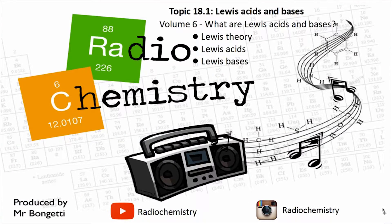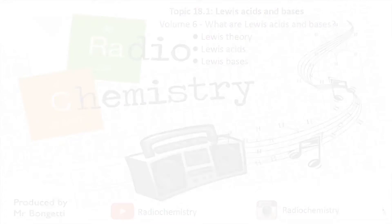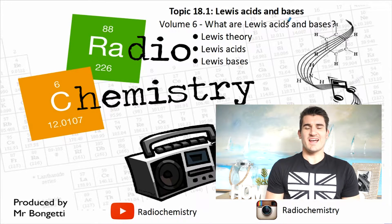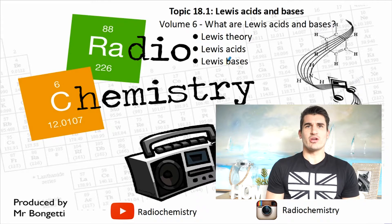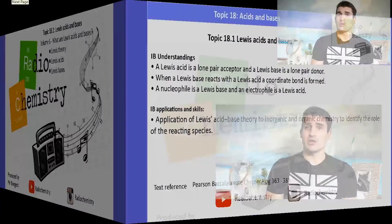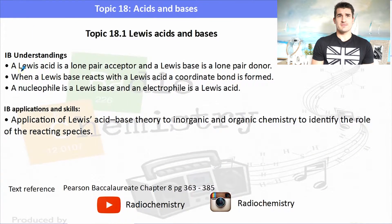How you doing guys, welcome to another video. This is topic 18.1, exclusive higher-level Lewis acids and bases. All right, volume six: what are Lewis acids and bases? We basically look at Lewis theory and then we need to know what a Lewis acid and a Lewis base is. The IB understandings and applications and skills focus on that understanding of what a Lewis acid is and what a Lewis base is, and that's what we're going to concentrate on.